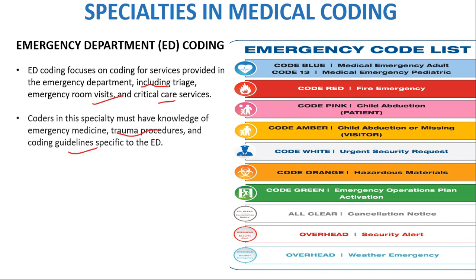Emergency code list: Code Blue — Medical Emergency (Adult); Code 13 — Medical Emergency (Pediatric); Code Red — Fire Emergency; Code Pink — Child Abduction (patient); Code Amber — Child Abduction or missing visitor; Code White — Urgent Security Request; Code Orange — Hazardous Materials; Code Green — Emergency Operations Plan Activation; All Clear — Cancellation Notice; Overhead Security Alert; Overhead Weather Emergency.